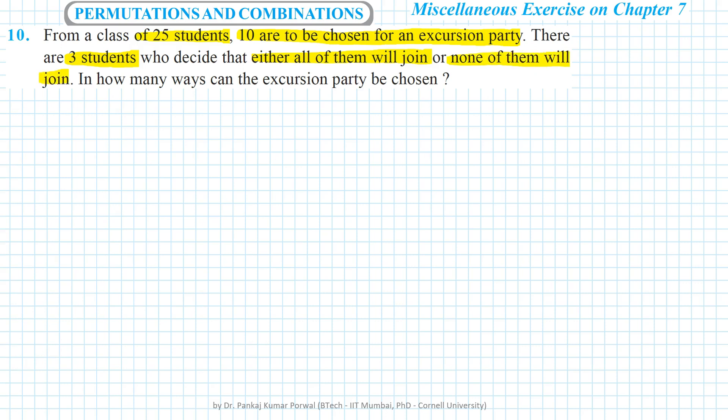We have to find how many ways can the excursion party be chosen. There are two cases. In the first case, either all three students will join or none of the three students will join. If all the students are joining, then we have to select only 7 out of the remaining 22, that will make the total number of students in the excursion party 10.